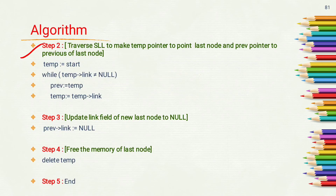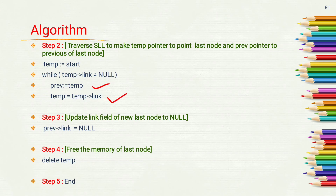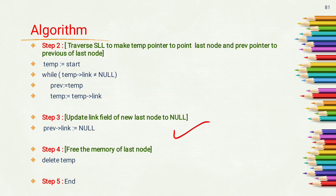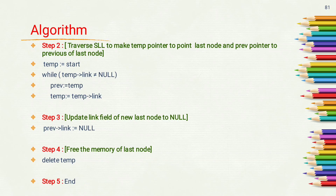Step 2: If the singly linked list is not empty, traverse it to make temp point to the last node and previous point to the node before the last. Store the address of the first node into temp, then perform a while loop: while temp->link is not equal to null, set previous = temp and move temp = temp->link. This stops temp at the last node and previous at the node before it. Step 3: Update previous->link = null. Step 4: Delete the memory of the last node pointed by temp — delete temp. Step 5: End.